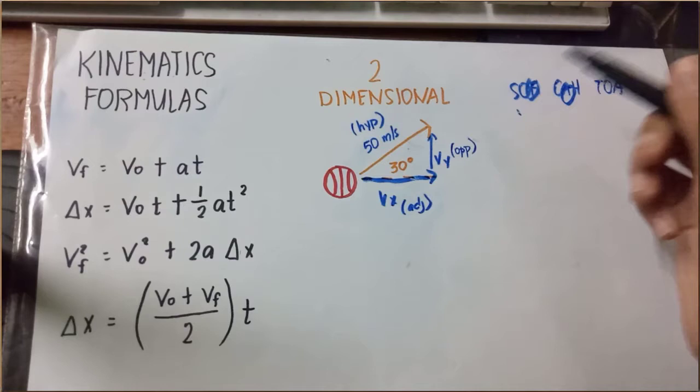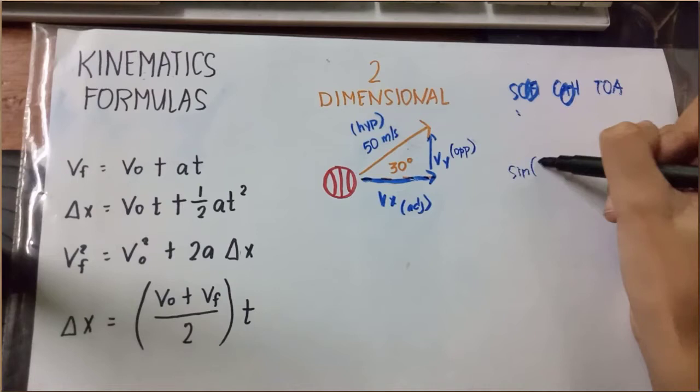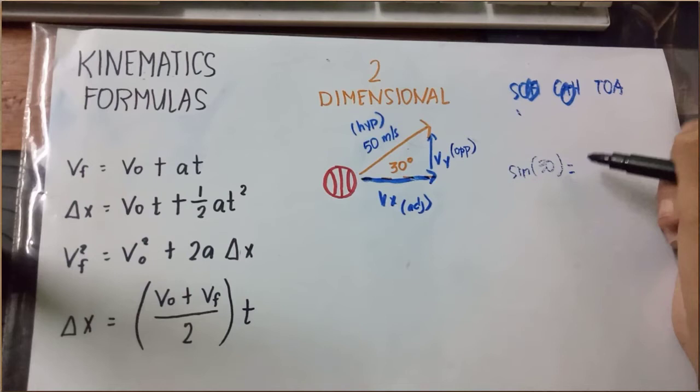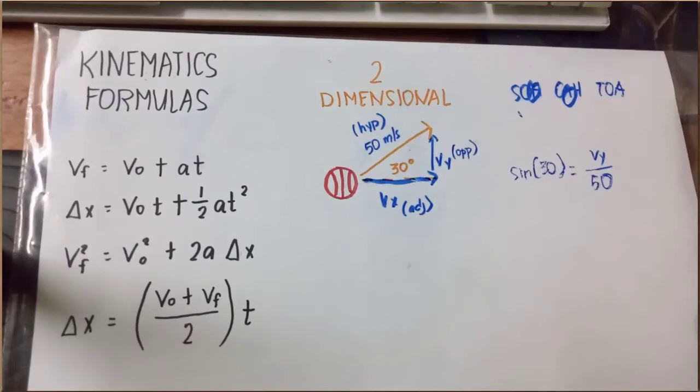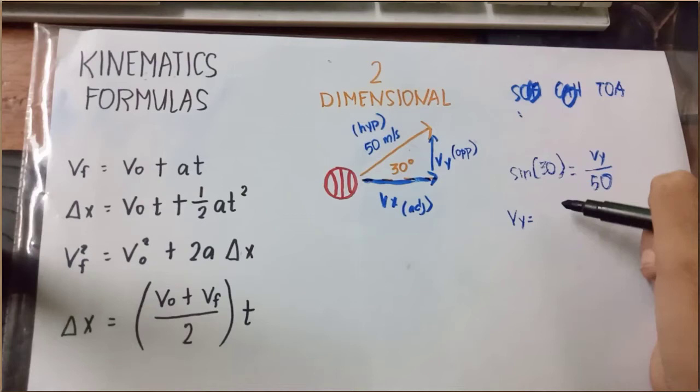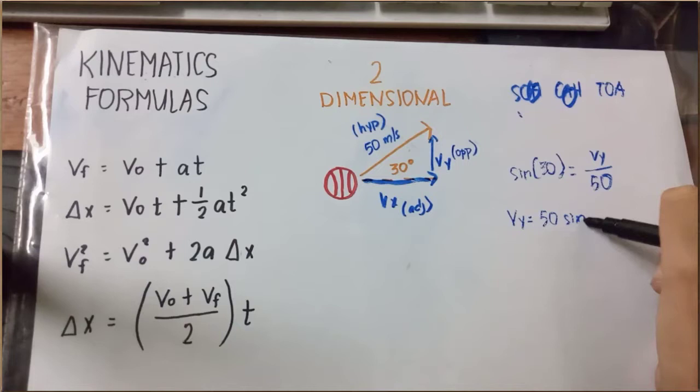At umpisa natin sa sine. So, the sine of 30 degrees is equal to the opposite over the hypotenuse. And our opposite side is equal to Vy over the hypotenuse. At alam natin na ang hypotenuse is 50. So, it's Vy over 50. At kung isusulat natin muli ang equation na ito in terms of our vertical velocity, our vertical velocity Vy is going to be equal to 50 times the sine of 30 degrees.